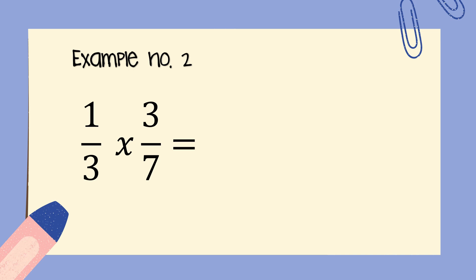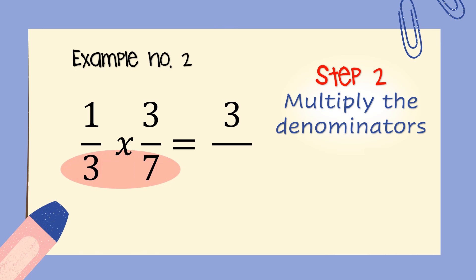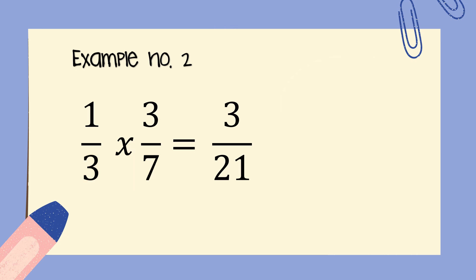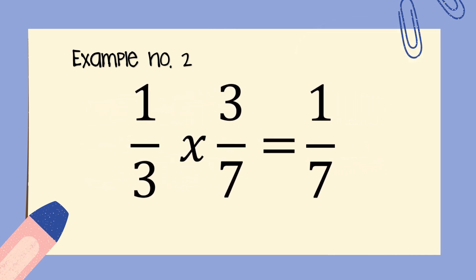Example number two: one-third times three-seventh. Multiply the numerators — one times three equals three. Then multiply the denominators — three times seven equals twenty-one. Since we have a fraction that can be reduced, we divide both numerator and denominator by their greatest common factor, which is three. Three divided by three equals one, and twenty-one divided by three equals seven. Therefore, one-third times three-seventh equals one-seventh.